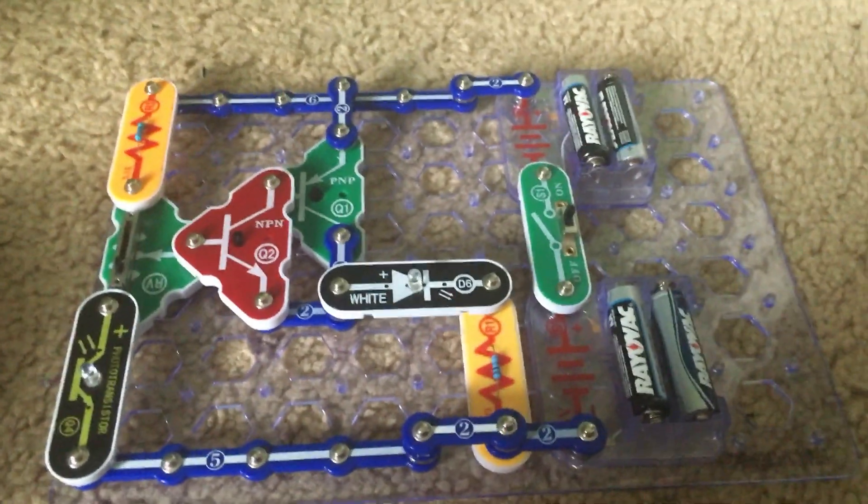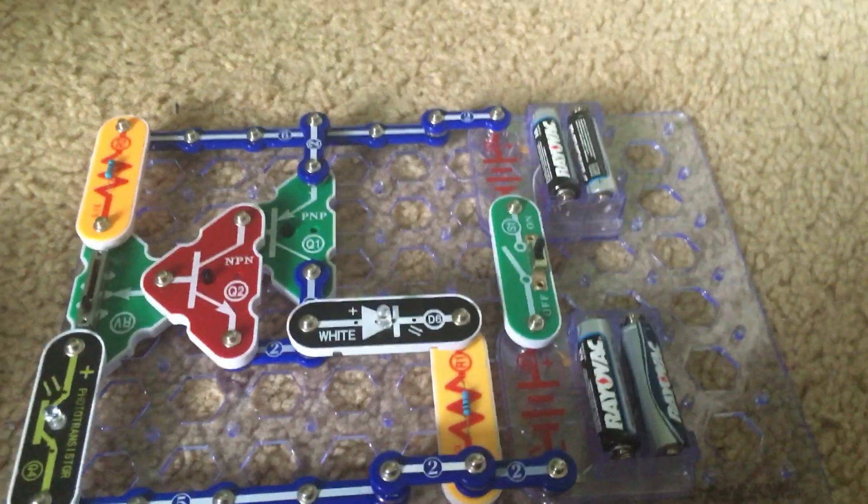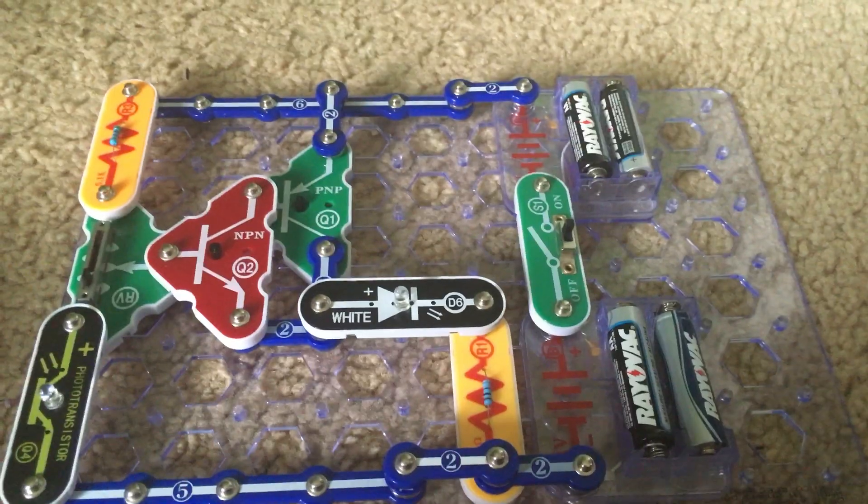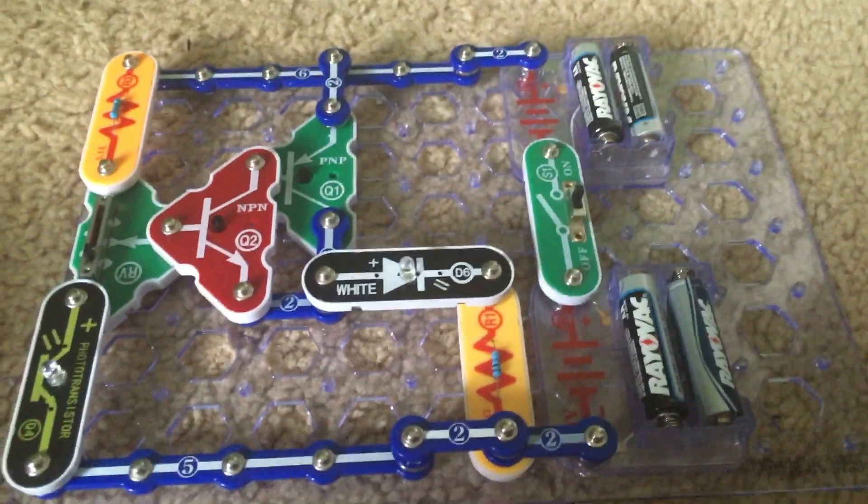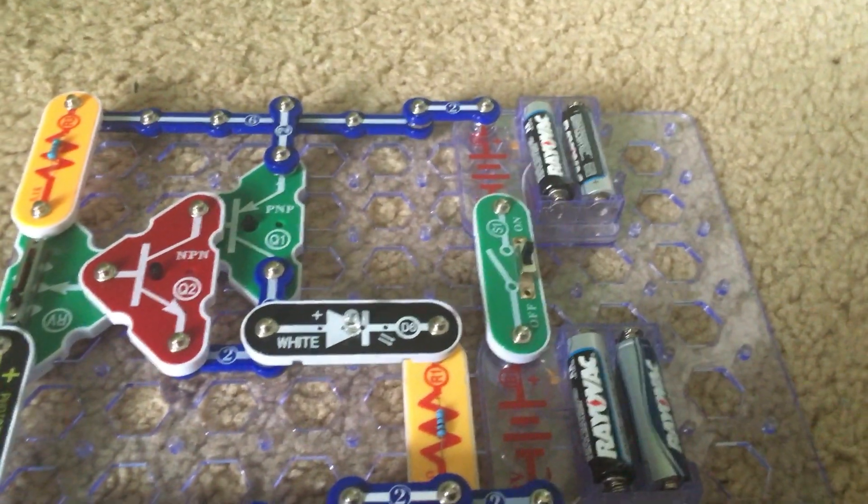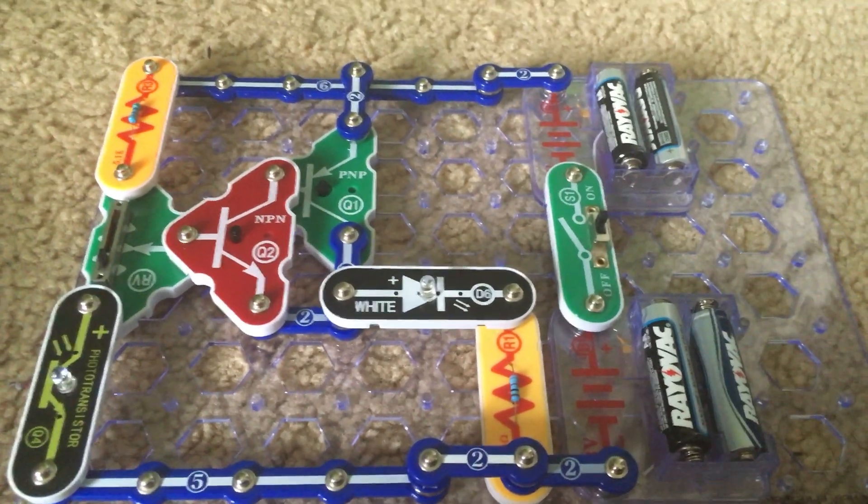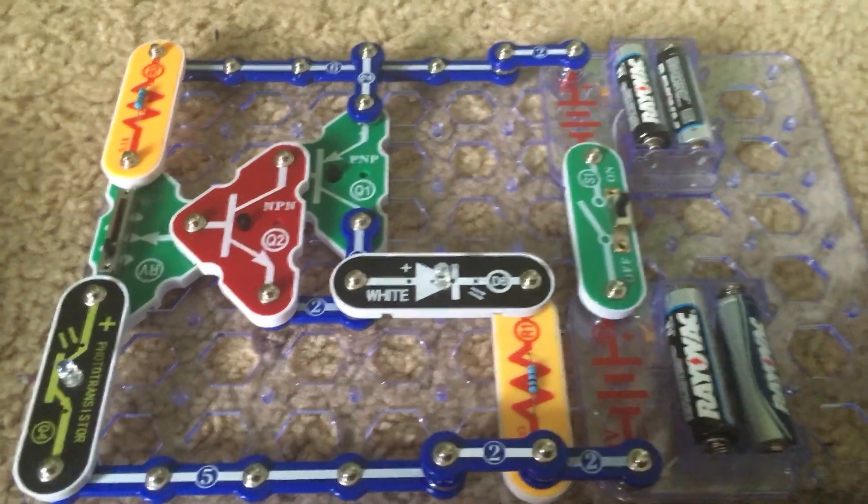This circuit works the same way as many outdoor lights which have special sensors that turn the light on in dark conditions, like street lamps or parking lot lamps. That way when they are not needed they will turn off automatically and save energy.